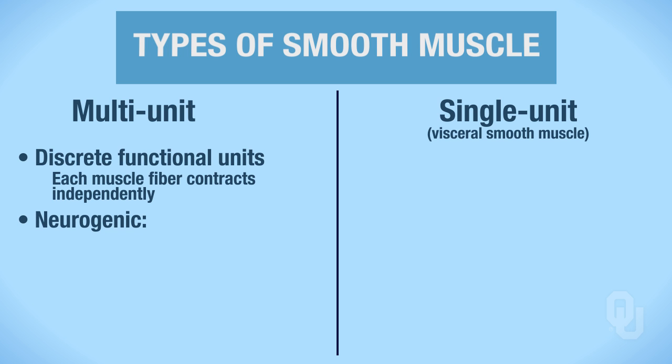Multi-unit smooth muscle is therefore neurogenic. Remember to break down the word: the suffix 'genic' means producing. So what is causing or initiating the contraction of the muscle? The neuron — that's what neurogenic means.